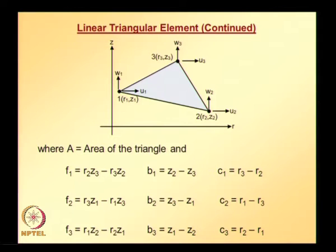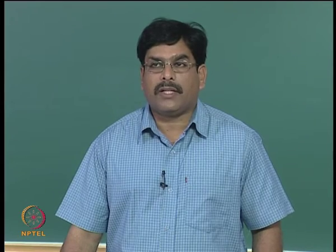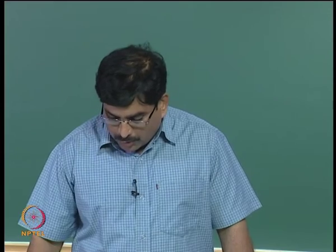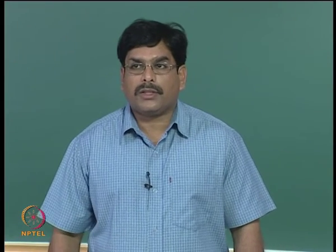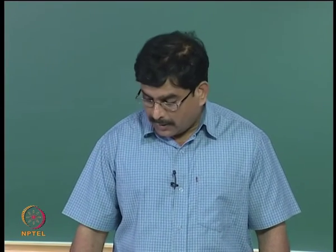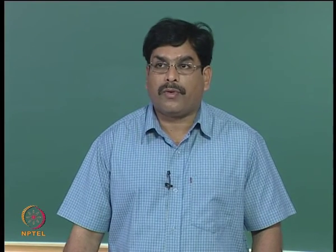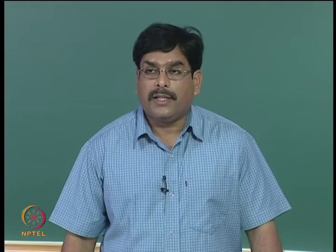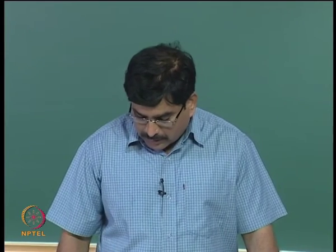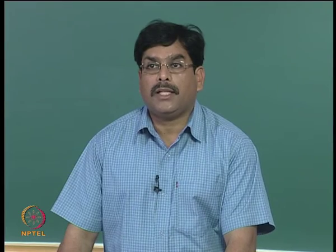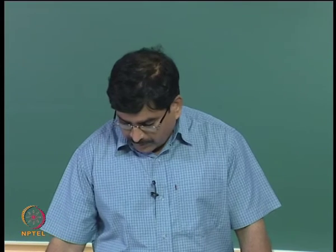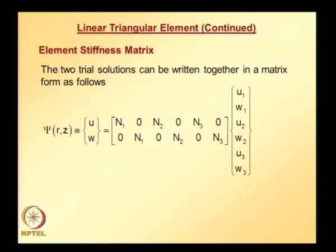This formula is the same one we use for calculating the area of triangles when dealing with plane stress and plane strain problems. So far we have seen how to express trial solutions for the axisymmetric linear triangular element in terms of finite element shape functions. Now we are ready to derive the element stiffness matrix. The two trial solutions can be written together in matrix form as psi equals N transpose D, where psi is a vector of displacement components in the R and Z directions.